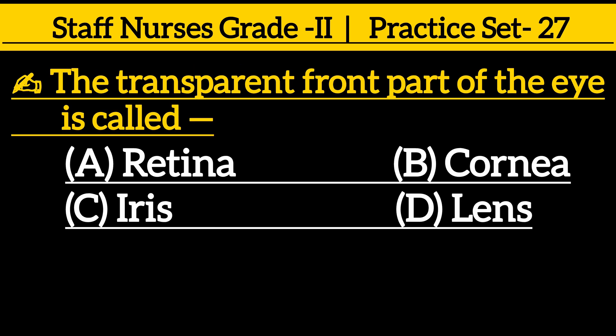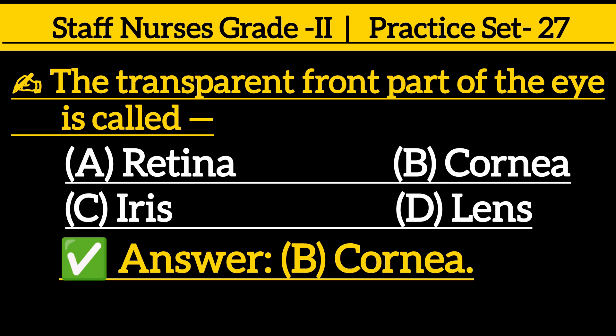Next one: the transparent front part of the eye is called — option A: Retina, option B: Cornea, option C: Iris, option D: Lens. Correct answer is option B: Cornea.